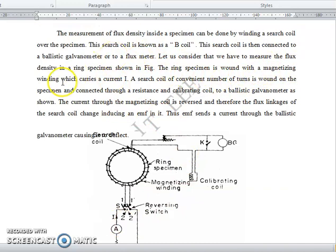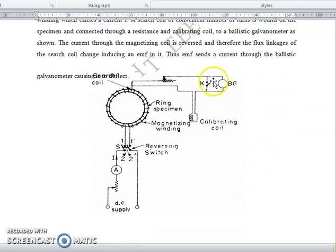The ring specimen is mounted with magnetizing winding which carries a current I. A search coil of continuous number of turns is wound on the specimen. The current through the magnetizing coil is reversed and therefore the flux linkage of the search coil changes, inducing an EMF. This EMF sends current through the ballistic galvanometer causing a deflection.